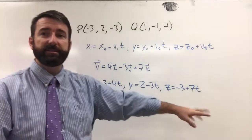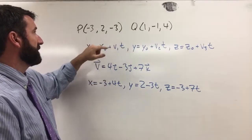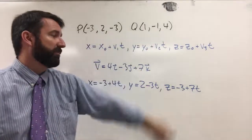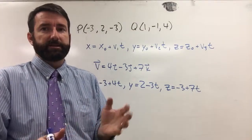And notice that these parametric equations are not unique. We could have chosen Q as our point there. That would still get us, that would still describe the same line.